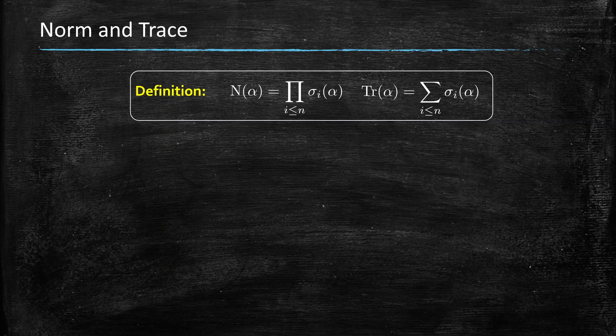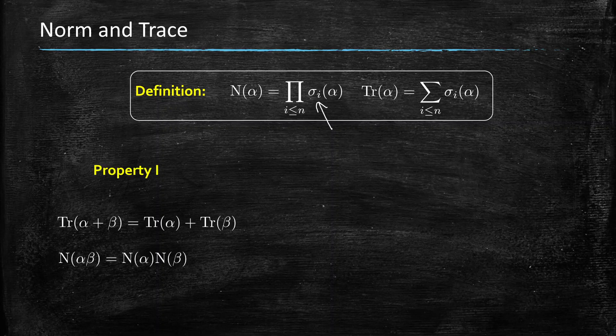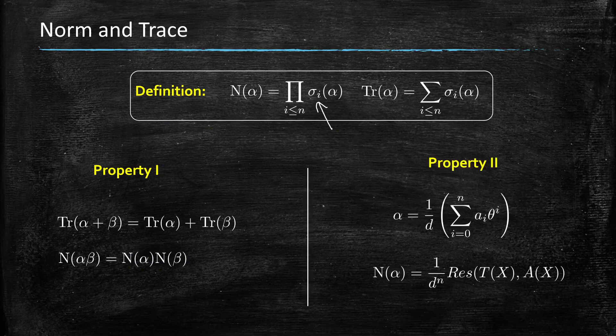So given all the complex embeddings, we can define the norm as the product of all these embeddings and the trace as the sum. So it's a very dual definition of norm and trace. And naturally we have that the trace is additive, so the trace of alpha plus beta is the sum of the traces, while the norm is multiplicative.